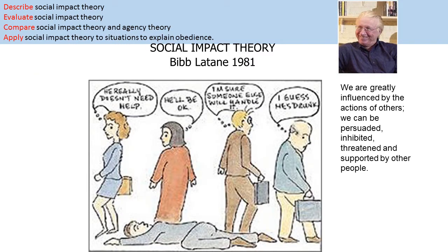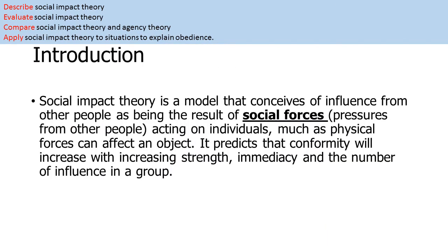Social impact theory was suggested by Bibb Latane in 1981, who suggested that we're influenced by the actions of others and he wanted to see how these other people would impact upon us and obedience. Social impact theory is a model that conceives of influence from other people as being a result of social forces, which act on individuals as much as physical forces can affect an object. It predicts that conformity or obedience will increase with increasing strength, immediacy and number of the influence that a group has.